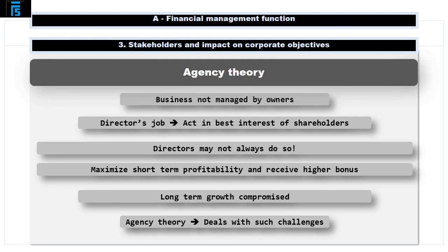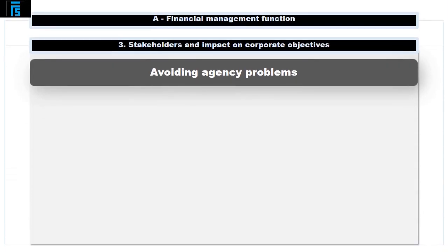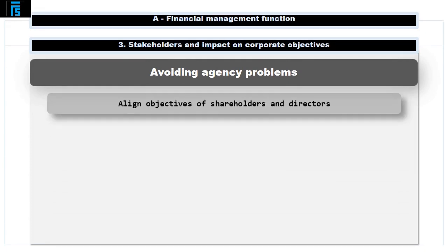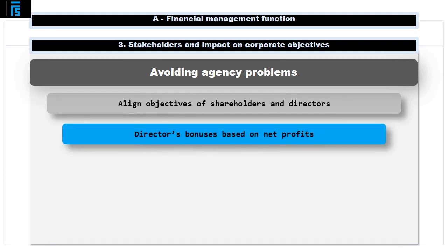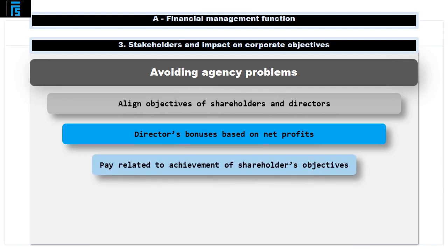Agency theory deals with problems arising due to the competing objectives between the principal and the agent — i.e., between the shareholders who are the principal and the agents who are the directors. To avoid agency problems, the objectives of the shareholders and the directors should be aligned. This can be done by basing the directors' bonuses on the organisation's net profits and relating the directors' pay to their achievement of the shareholders' objectives.